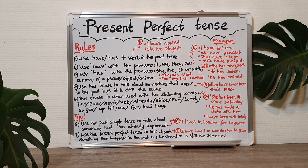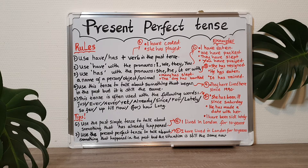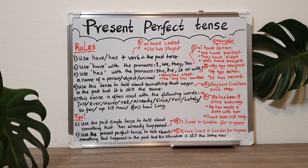You have to use 'has' with the pronouns she, he, or it, or with the name of a person, the name of an object, or the name of an animal. So you get: she has, he has, it has, Jane has (that is the name of a person), the clock has (that is the name of an object), the animal has.